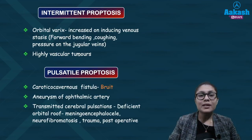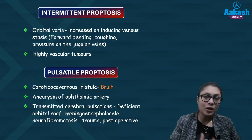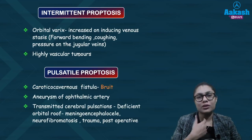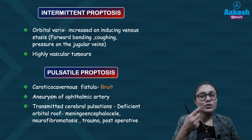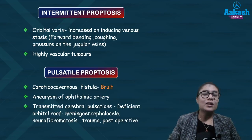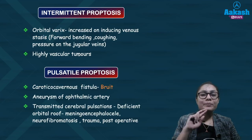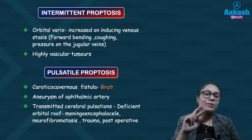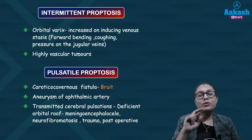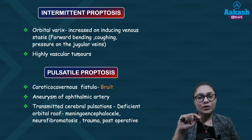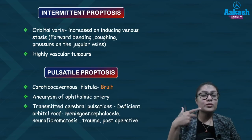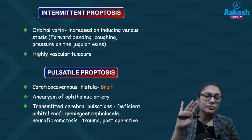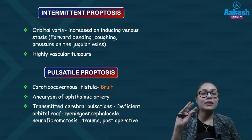Intermittent proptosis is seen in vascular tumors like orbital varices, which increase whenever there is increased venous pressure — as in forward bending, coughing, or pressure on the jugular veins — causing the tumor to enlarge and proptosis to increase. Pulsatile proptosis is seen due to arteriovenous connections. The most important cause is carotico-cavernous fistula, whose characteristic features are pulsations, bruit on auscultation, and palpable pulsations on touch.